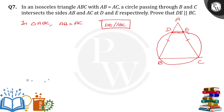So how can we do that? In triangle ABC, when AB is equal to AC, angle B is equal to angle C. Because when two sides are equal, the opposite pair of angles are also equal.